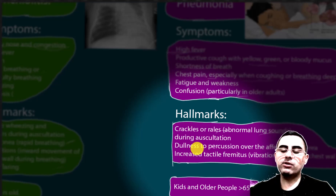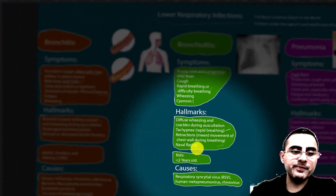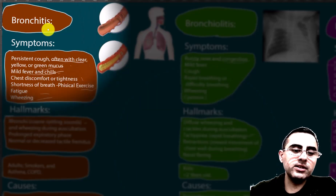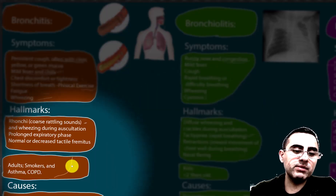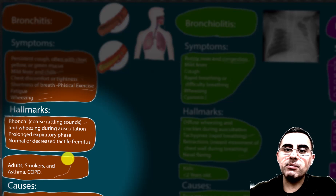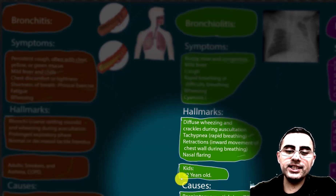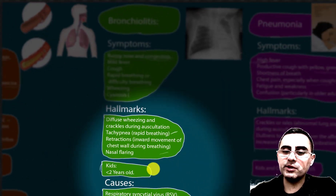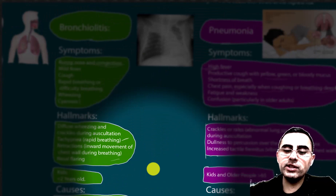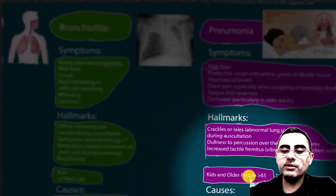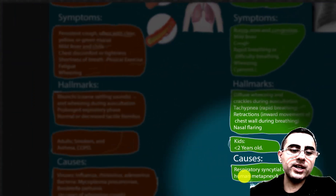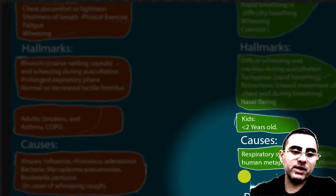Bronchitis usually affects adults who are smokers or have asthma or other chronic lung problems. Bronchiolitis usually affects children less than two years old and sometimes newborns. Pneumonia usually affects children or older people, typically 65 or more.